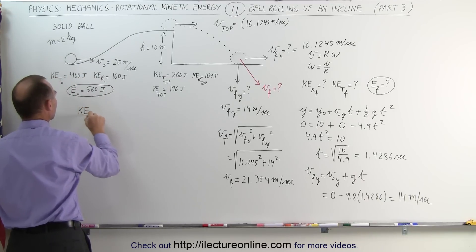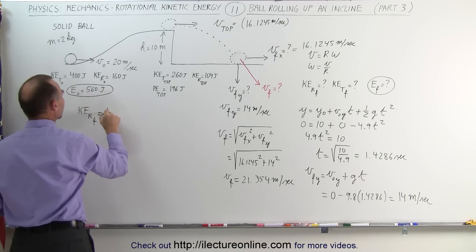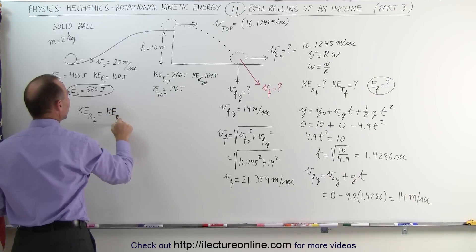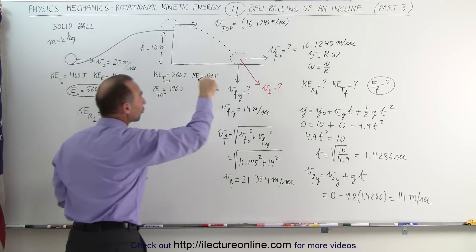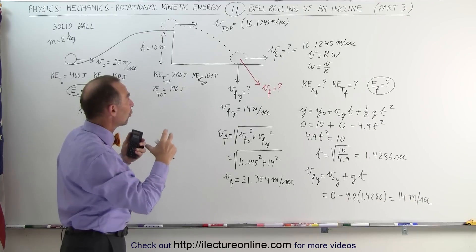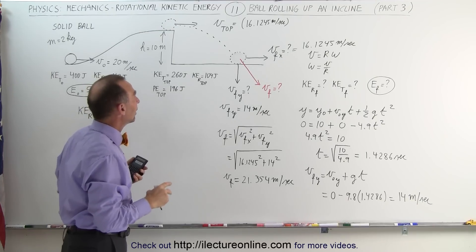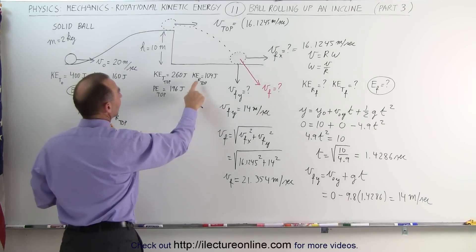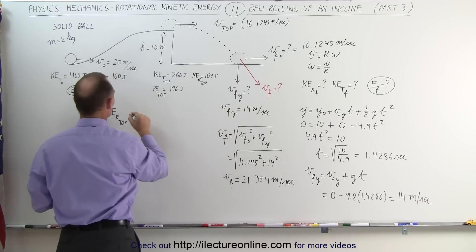Which means that the final rotational kinetic energy must equal the kinetic energy rotational at the top, because it's not going to slow down this rotation, it's not rubbing up against anything, there's no forces retarding the rotation, and so we can say that this would be equal to 104 joules.